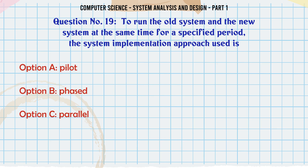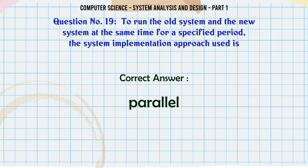To run the old system and the new system at the same time for a specified period, the system implementation approach used is: A. Pilot. B. Phased. C. Parallel. D. Direct. The correct answer is: Parallel.